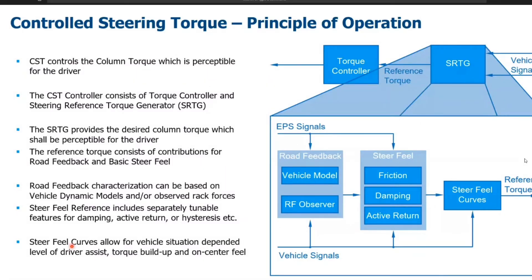Steer feel functions are also included, which allow for separately tunable features like damping, active return, or hysteresis in the provided steer feel. In the very end, we have steer feel curves which allow to shape the torque build-up and translate all these forces calculated at the rack into a torque at the steering wheel which the driver shall feel. As shown here, this reference torque is then sent to the torque controller, which computes torque requests for the EPS motor to ensure that the requested torque for the driver is perceptible.